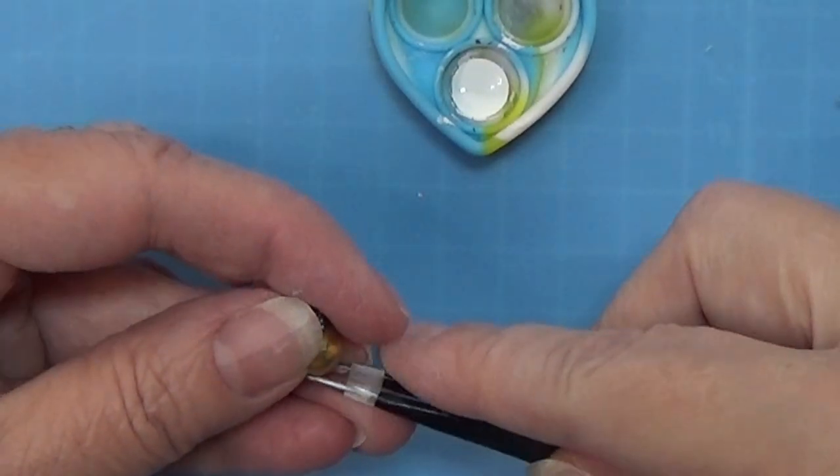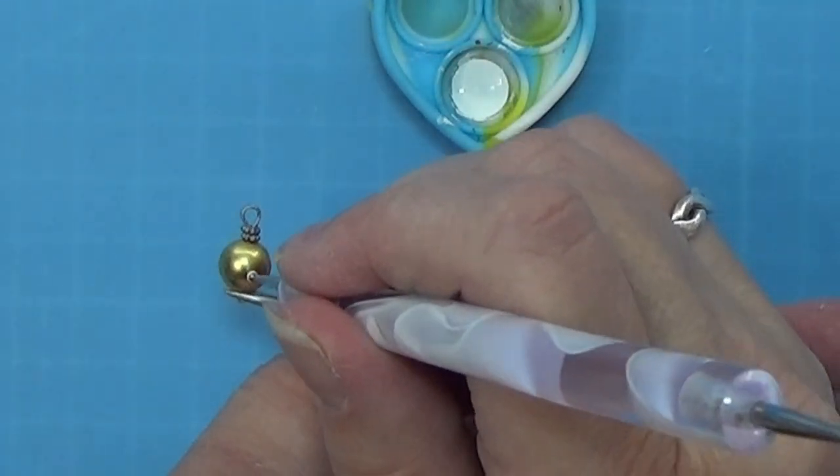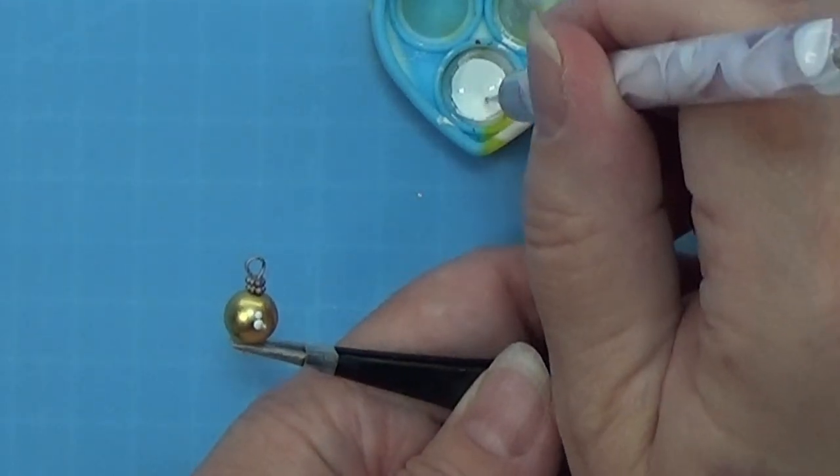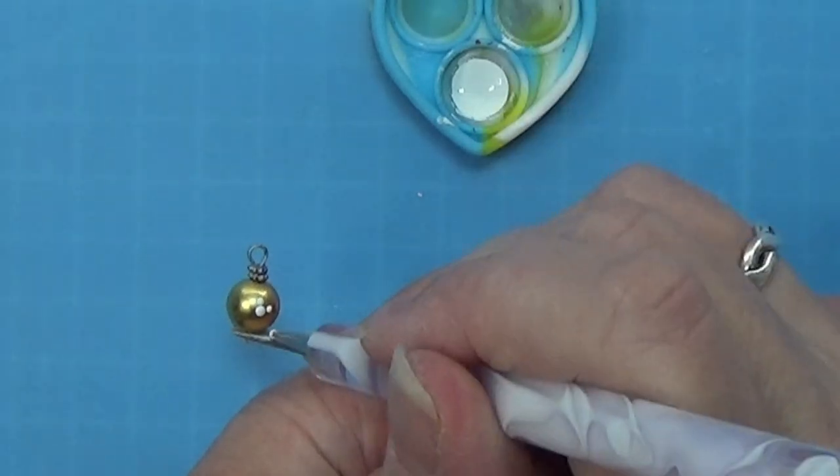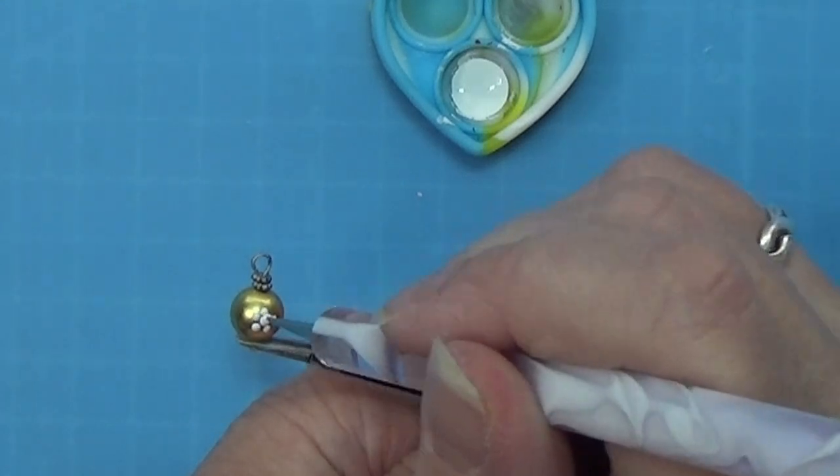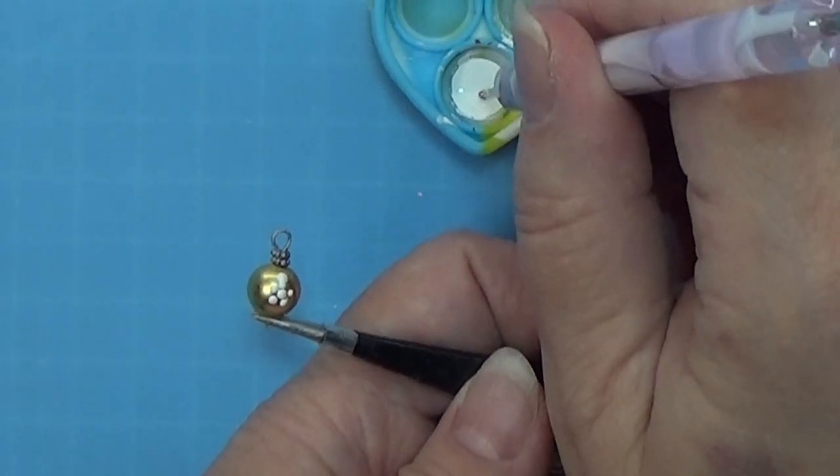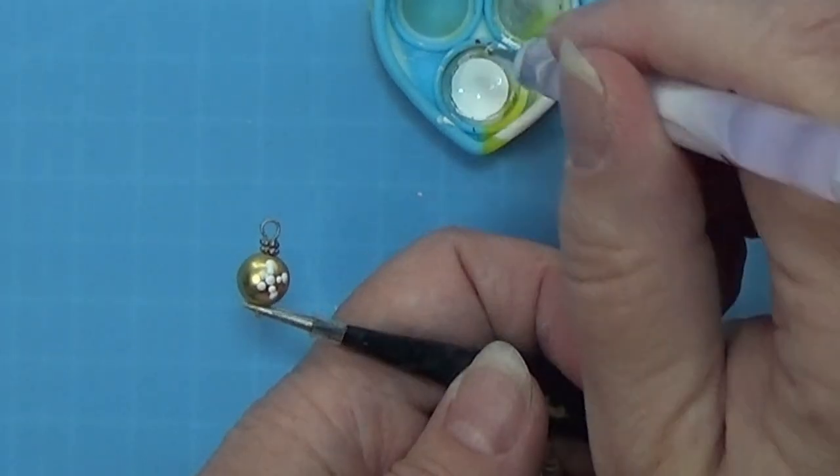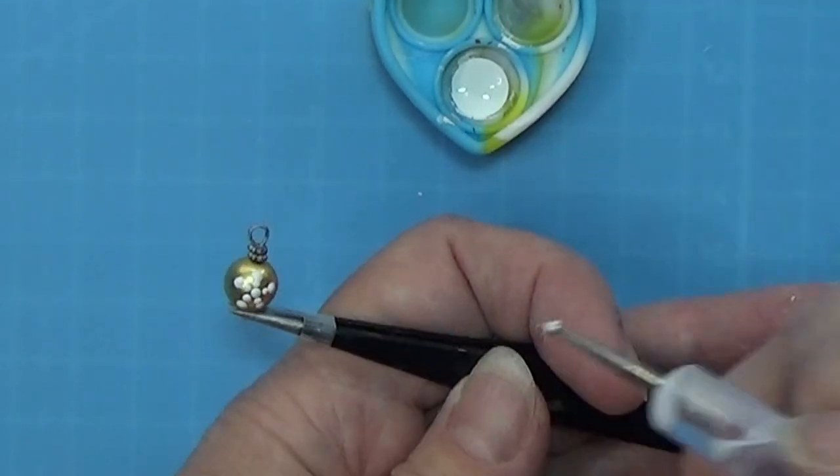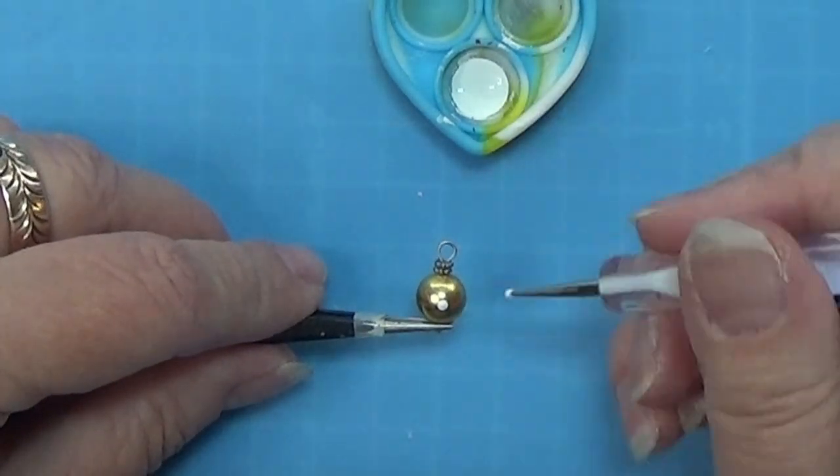The next one I am going to use my dotting tool and make a snowflake. The middle dot was a big one. Now I am placing five smaller dots around the big dot, then I'm going back to the big dot and placing a big dot at the end of all the smaller dots. And I'm doing this on both sides of the little ornament here.